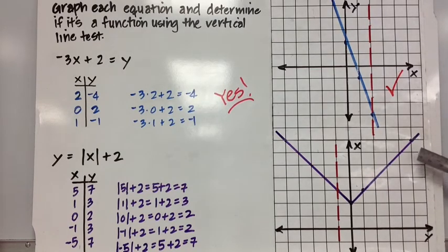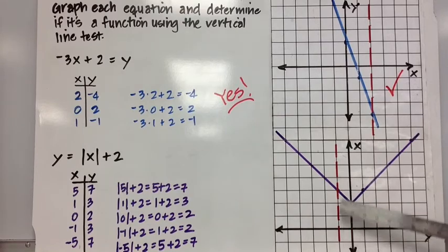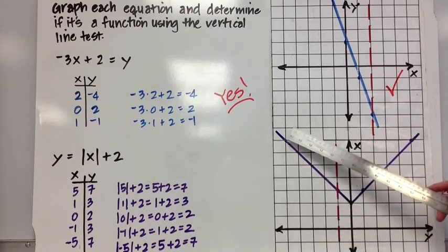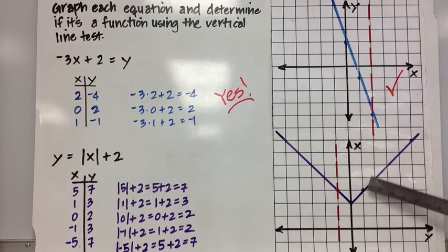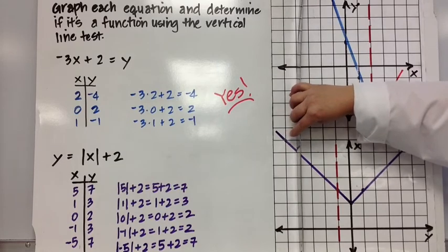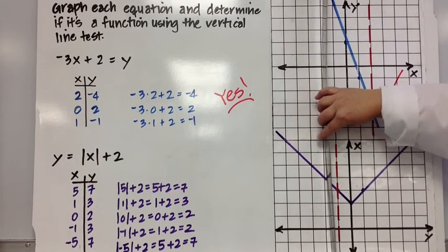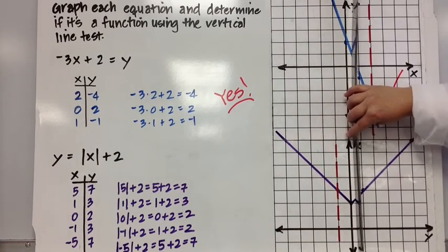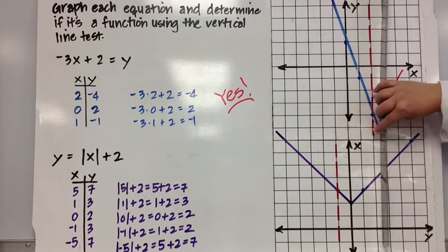5 comma 7, 1 comma 3, 0 comma 2, negative 1 comma 3, and negative 5 comma 7. I draw my line through the points, making a V-shaped curve. You can see I already drew one vertical line through the graph. It only passes through it once. I can take my ruler and do the same across the whole graph. And you can see I'll never pass that graph in more than one place at a time.